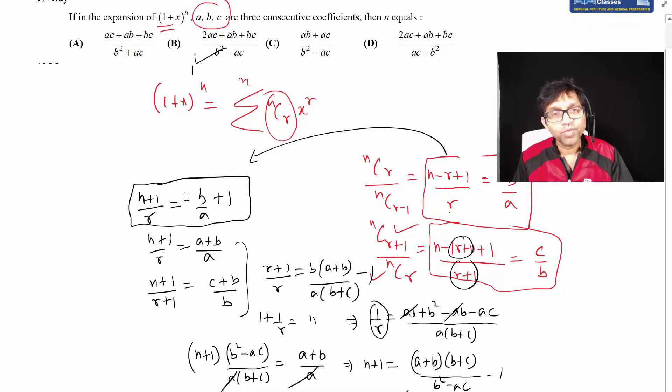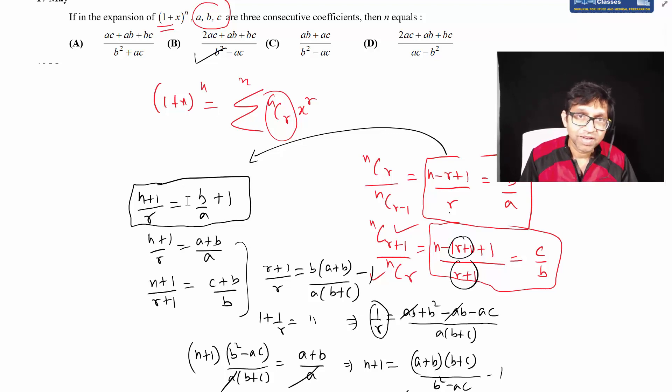The question was to make two equations and eliminate r. Using the formula nCr over nC(r-1) equals (n-r+1)/r. The calculation needs to be done carefully, otherwise problems arise in exams.